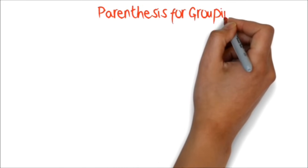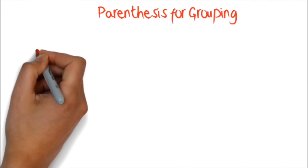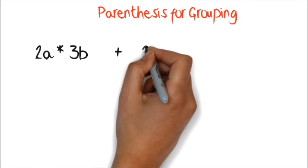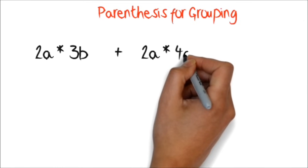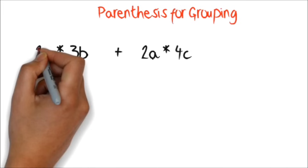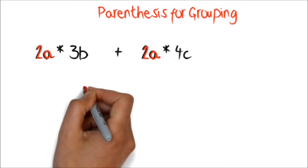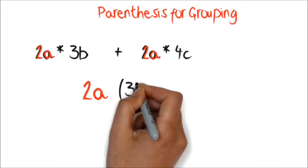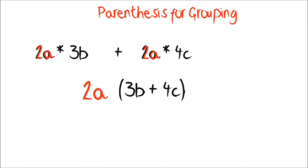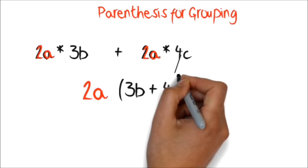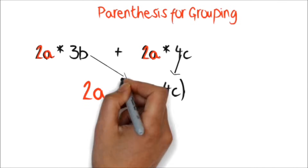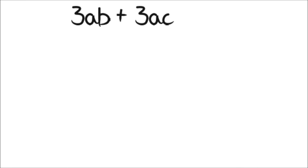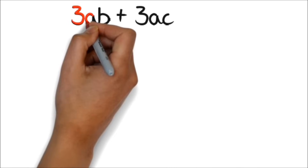Parentheses for grouping. Let's say we have 2a times 3b plus 2a times 4c — notice we have 2a in both terms. We can rewrite it as 2a times in parentheses 3b plus 4c, bringing the common factor out and the uncommon parts inside the parentheses. For example, with 3ab plus 3ac, we notice that 3a is common in both terms.